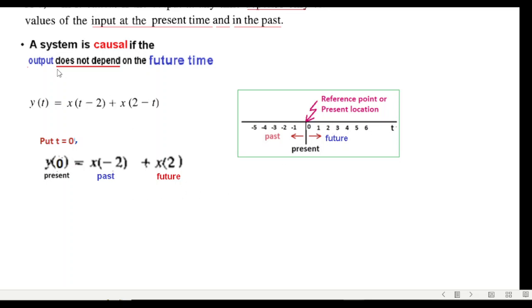So our definition says a system is causal if the output does not depend on the future. Now here the output is depending on the future, therefore this system is not causal. So it's non-causal system.